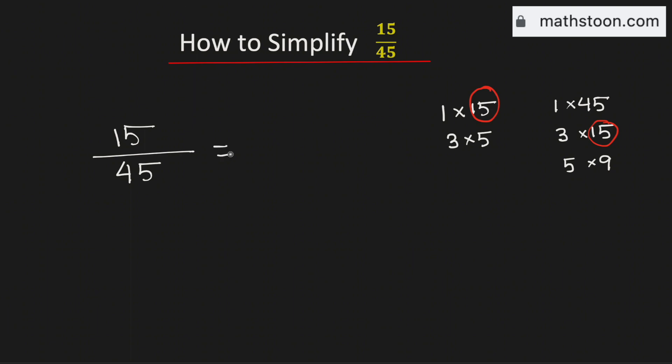Therefore to simplify this fraction, we need to divide both the numerator and the denominator by their greatest common factor which is 15. And by doing so, we will get 1 in the numerator and 3 in the denominator.